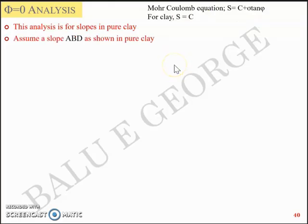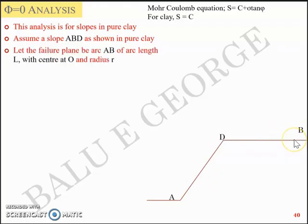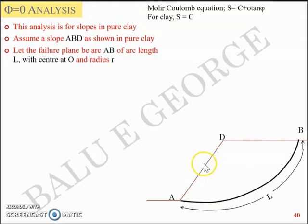Let's assume a slope ABD as shown in a soil mass that is pure clay. So I have a geometry ABD and the slope is like this. And the slope has a length along the curve whose value is L. So let the failure plane be an arc AB of length L with a center at O and radius R. So you have the slope ADB like this, and you have the failure curve AB whose length is L. And this curve is defined as a part of a circle whose center is O and radius is R.